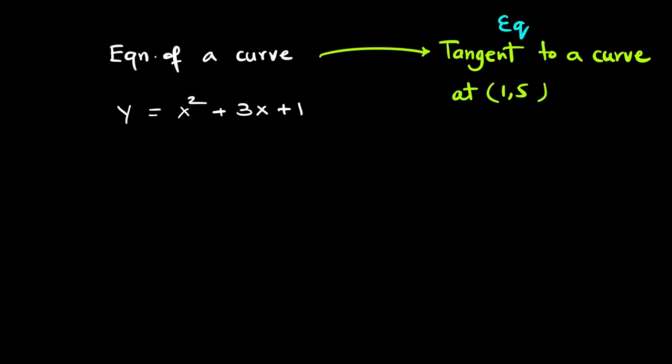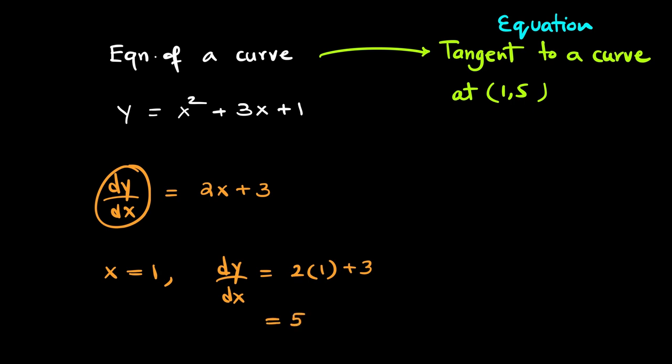So how do we get started with this one? The rule is pretty simple. We differentiate the equation. We find the gradient function dy/dx, that is 2x plus 3. We plug in the value of x equals 1. So dy/dx comes out to be 2 into 1 plus 3, which comes out to be 5.